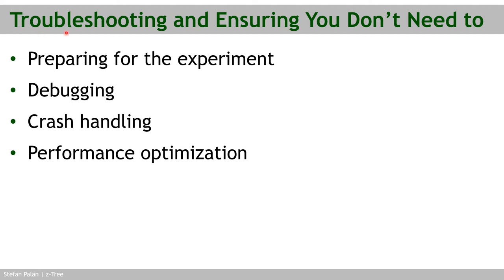This chapter is about worst-case troubleshooting and ensuring you don't need to do it. There's a big focus on prevention because it's always better to prevent problems before they happen than to react when they have happened. The chapter covers how to prepare for the experiment so it runs smoothly, how to debug your code, what to do if there is a crash during the experiment, and performance optimization through programming best practices.